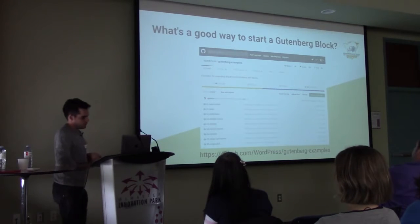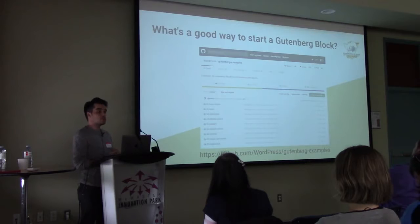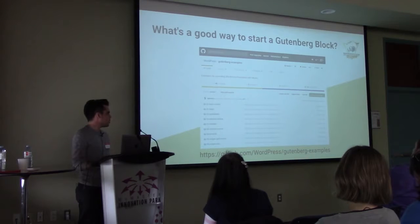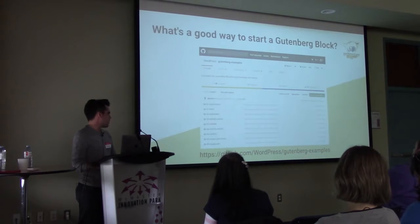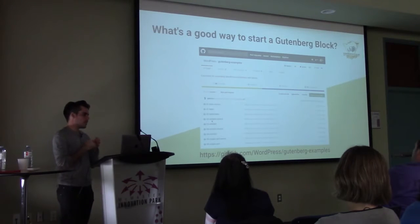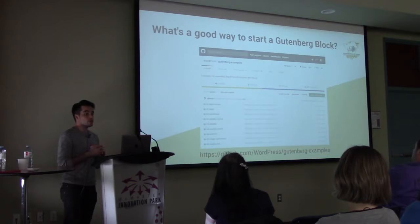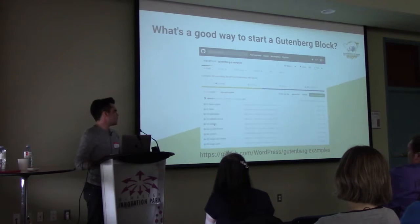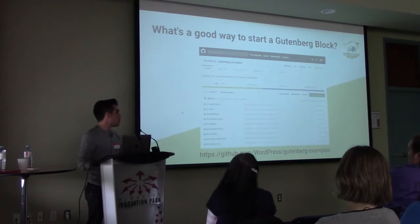What's a good way to start a Gutenberg block? There are two ways. One is to use the Gutenberg Examples repo on GitHub, maintained by the WordPress team. It's called 'Gutenberg Examples' and it has around 10 plugins that showcase the capabilities of Gutenberg. The code I'm going to show here are modifications of some of those plugins — really simple, really straightforward, and one of the best ways to learn how to build blocks.